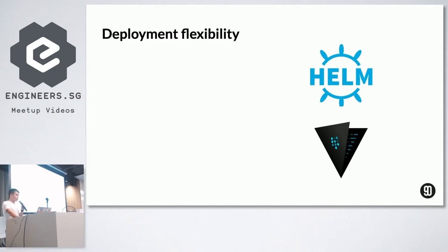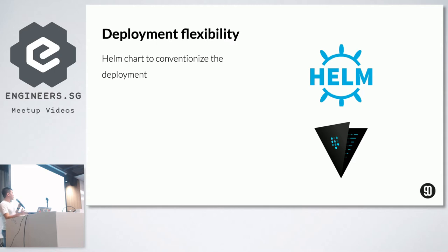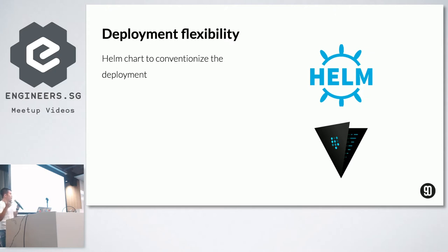We also use Helm to deploy applications in the Kubernetes cluster, including services from the data team. Helm is a package manager for Kubernetes — it's a way to standardize the deployment process. In Helm, we have a set of templates and a set of values. For each environment — for example staging and production — we have a different set of values and secrets. At deployment time, we apply the set of values into the templates to create a Kubernetes manifest and deploy. It also provides the ability to roll back the deployment in case something goes wrong.